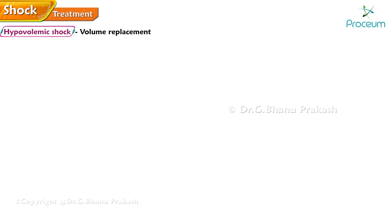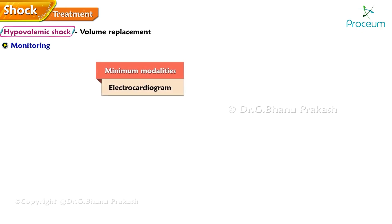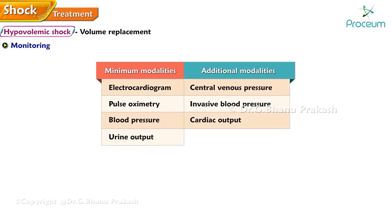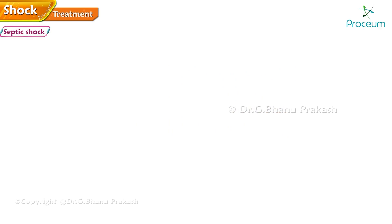Volume replacement monitoring during resuscitation: certain minimum monitoring modalities and more advanced monitoring techniques are essential to assess a patient's condition and guide appropriate interventions. Minimum modalities include electrocardiogram, pulse oximetry, blood pressure, and urine output. Additional modalities include central venous pressure, invasive blood pressure, cardiac output, base deficit, and serum lactate.